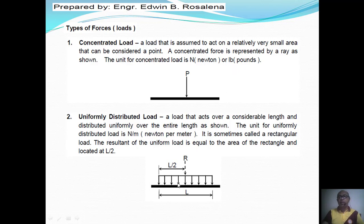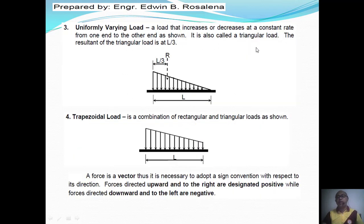A uniformly distributed load is a load spread over a considerable length and distributed uniformly over that length, as shown in the figure. For a uniformly distributed load, the resultant R is located at the middle of the length — if the length is L, then the resultant is located at L over 2. A uniformly varying load increases or decreases in magnitude, starting with its value then uniformly decreasing to zero. The resultant of a uniformly varying load is located at the centroid, L over 3. A trapezoidal load is simply a combination of rectangular and triangular loads — if you divide the trapezoid into rectangular and triangular portions, you can find the resultant of each subdivision.